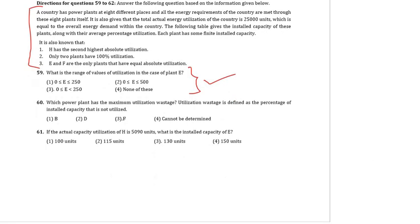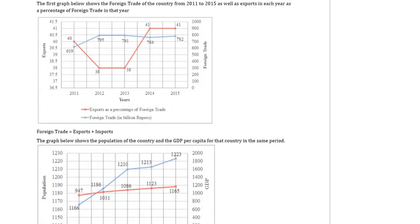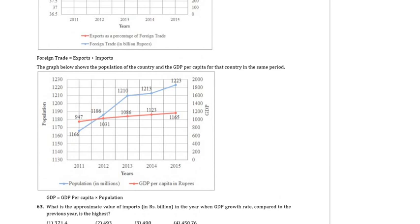Finally, the last set that we discussed earlier, there is one on exports. You have exports as a percentage of foreign trade, the question is foreign trade is exports or imports. So if exports is a certain percent, imports is the rest of it. You have foreign trade, so you can get the value of actual exports and imports, you have the calculator. The graph shows the GDP per capita which means per head and the population. So you can find the actual GDP. In that sense, this is more like an IRFT set. You understand these two things, you make a table for each of these five years. Use the calculator, this set is an absolute no-brainer.